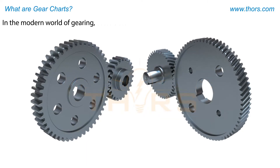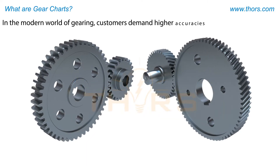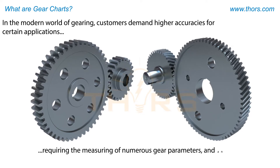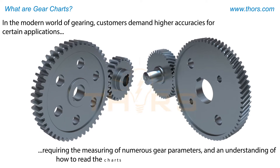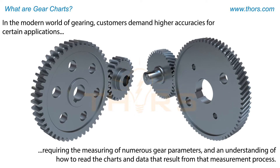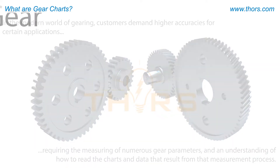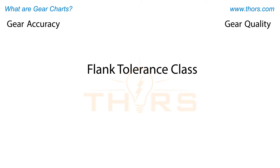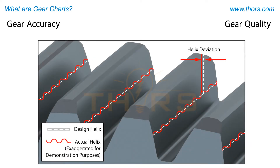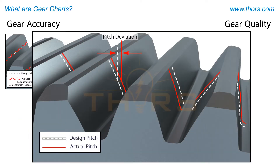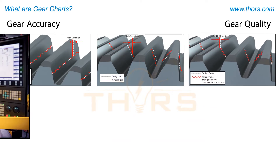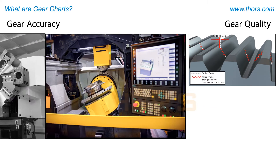In the modern world of gearing, customers demand higher accuracies for certain applications, requiring the measuring of numerous gear parameters and an understanding of how to read the charts and data that result from that measurement process. Gear accuracy, synonymous with the term gear quality, is designated by a flank tolerance class. The allowable tolerances that relate to each class are calculated based on formulas specified in the relevant industry standards.